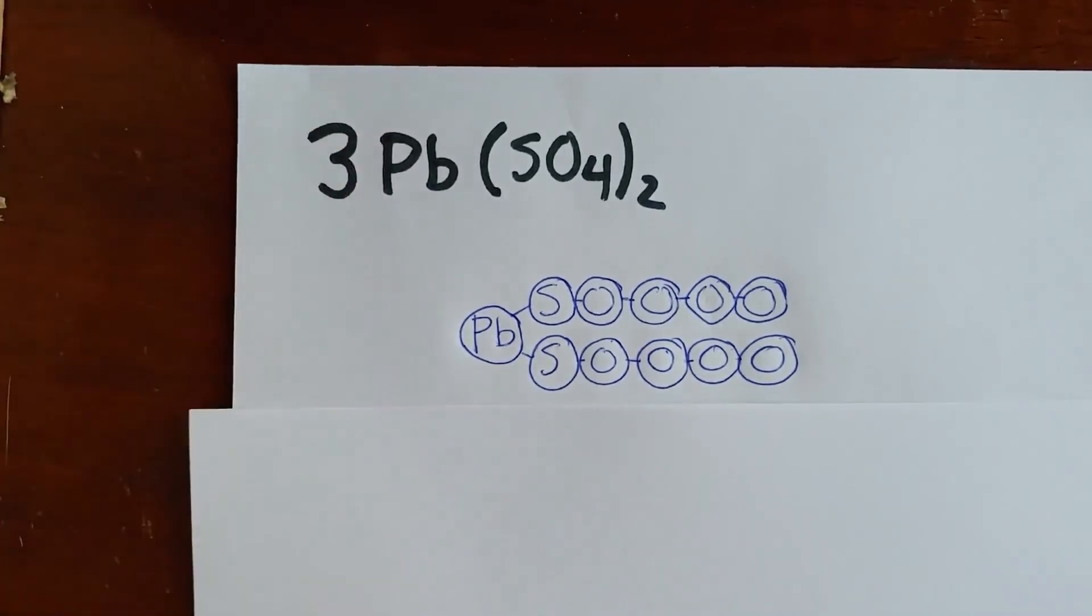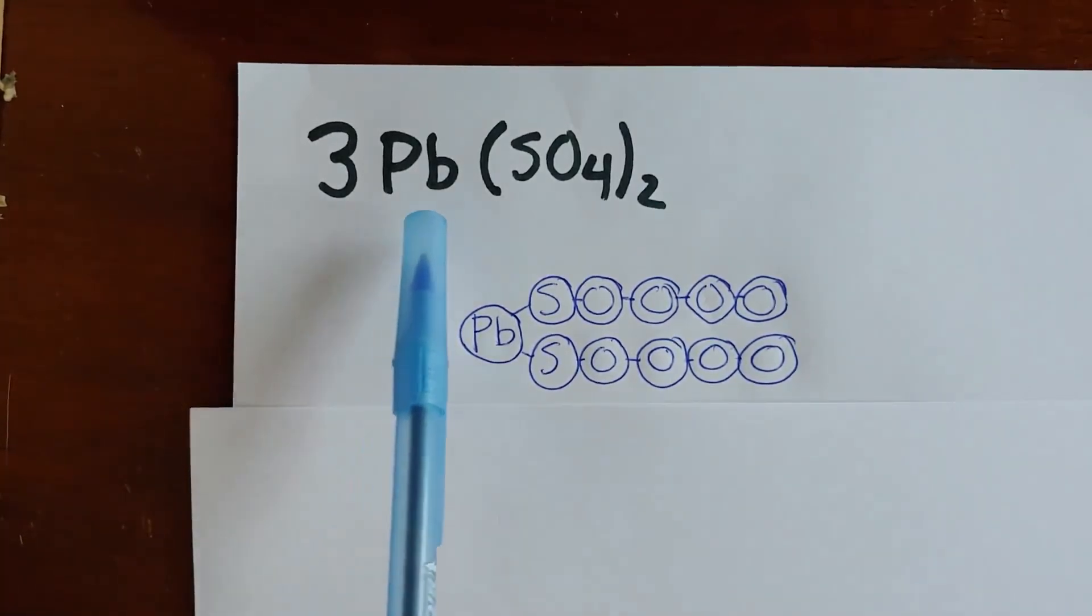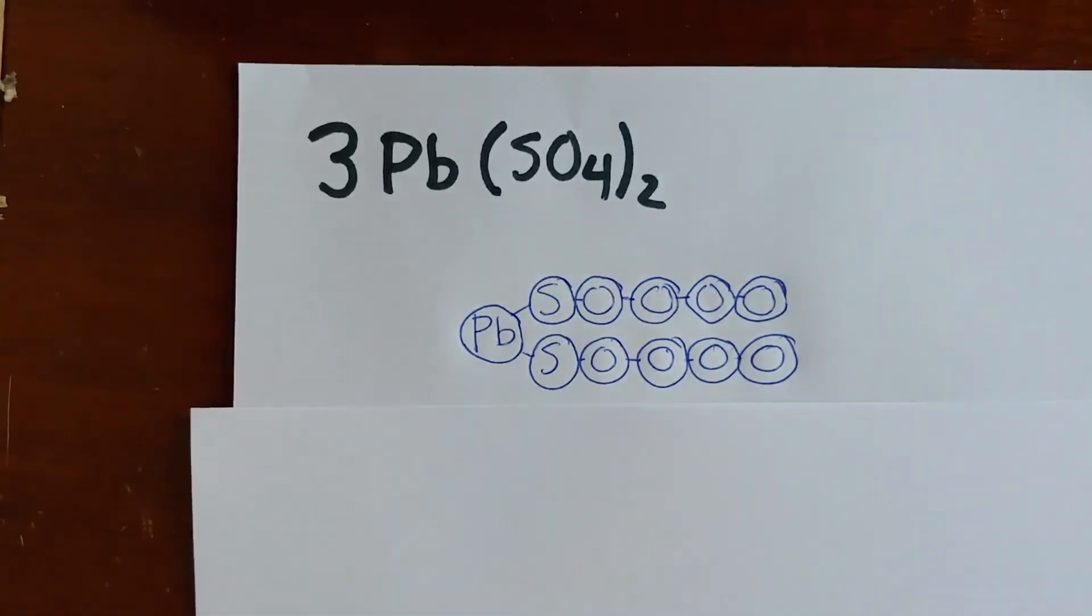But then there's that annoying little coefficient I covered up, a three. Well, remember the coefficient in front tells you how many copies to make. We made one copy of Pb(SO4)2. Well, we need to have three copies of it.